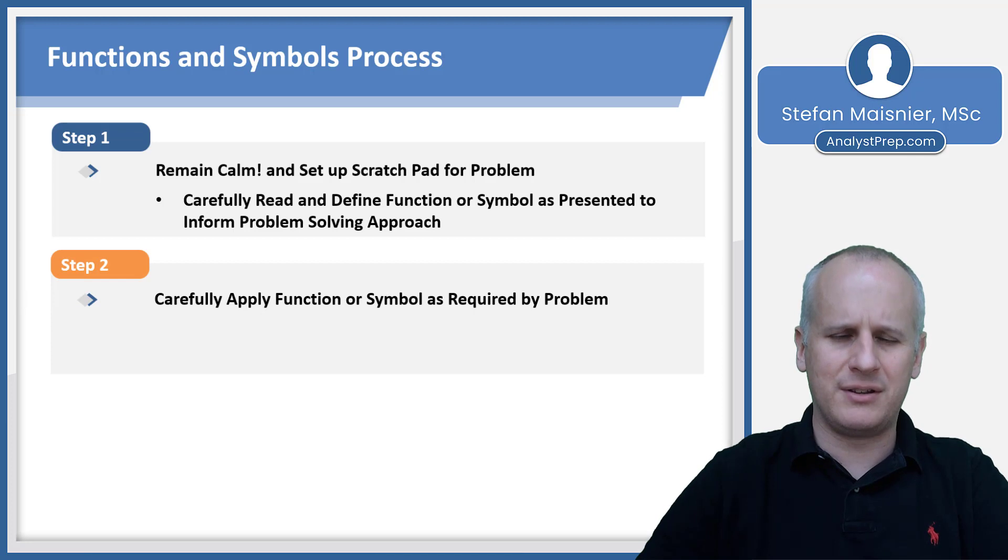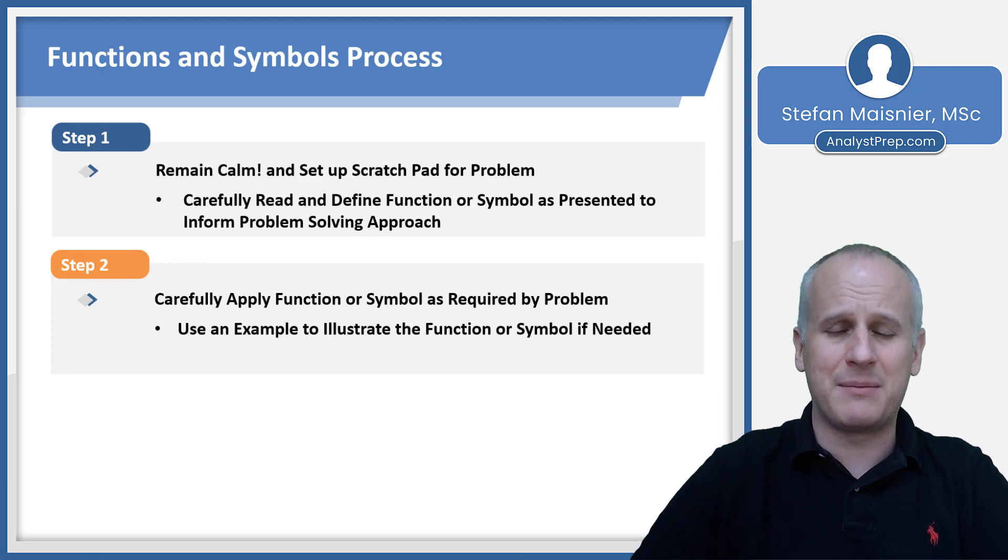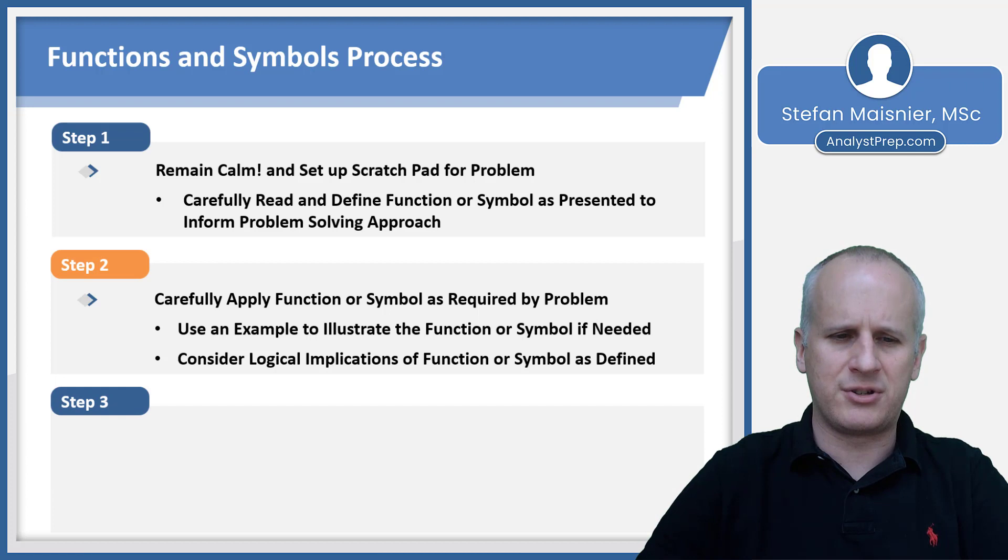Our second step is going to be to carefully apply the function or symbol as required by the problem. You will want to use an example to illustrate the function or symbol if it's not provided and largely if it's needed. Most of the time it will be if you're being asked about some sort of abstract operation. You'll want to consider the logical implications of the function or symbol as defined before you start just simply calculating or processing the information as well.